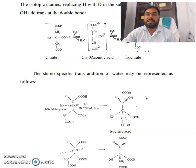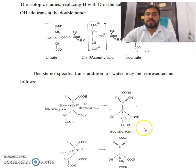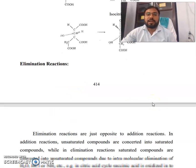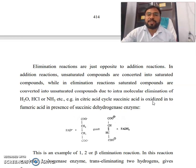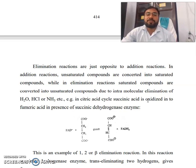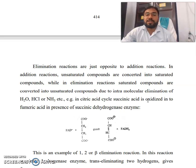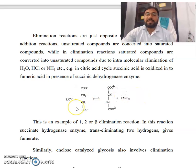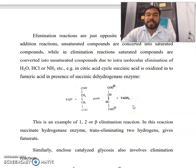The stereospecific trans addition of water may be represented as: the hydroxyl group behind the plane and hydrogen in front, giving isocitric acid. Elimination reactions are just the opposite of addition reactions — saturated compounds are converted into unsaturated compounds due to intramolecular elimination of water, HCl, or ammonia. For example, in the citric acid cycle, succinic acid is oxidized into fumaric acid in the presence of succinate dehydrogenase enzyme. This is an example of 1,2 (beta) elimination; the enzyme succinate dehydrogenase trans-eliminates two hydrogens to give fumarate.